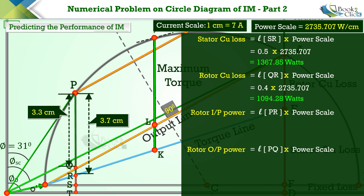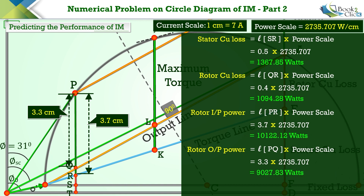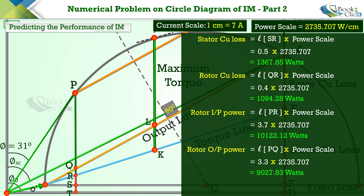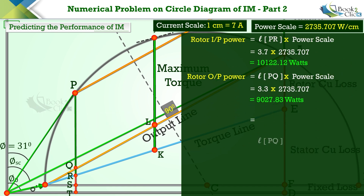To calculate the rotor input power and output power, multiply the lengths of lines PR and PQ respectively by the power scale. The length of PR is 3.7 centimeters and the length of PQ is 3.3 centimeters. The rotor input power is 10,122 watts and the output power is 9,027 watts.